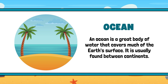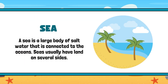The first one is the ocean. An ocean is a great body of water that covers much of the Earth's surface. It's usually found between continents. The next one is the sea. A sea is a large body of salt water.